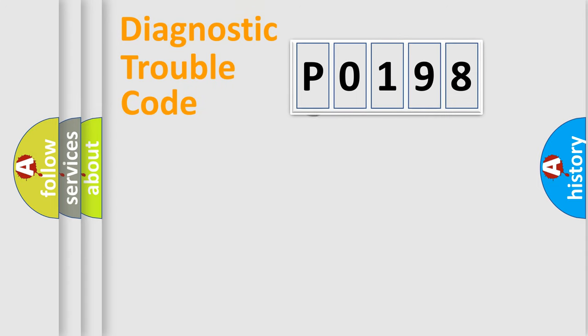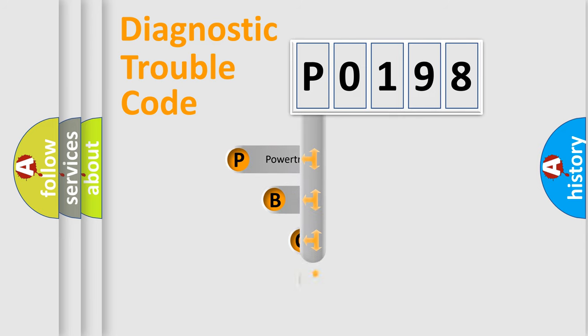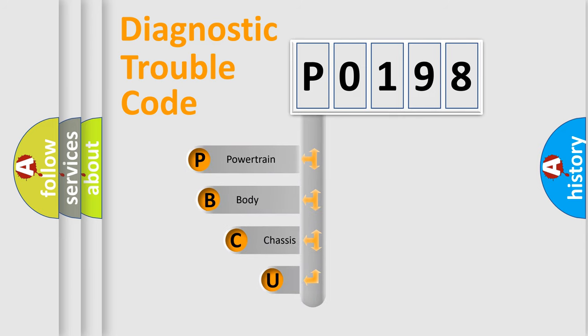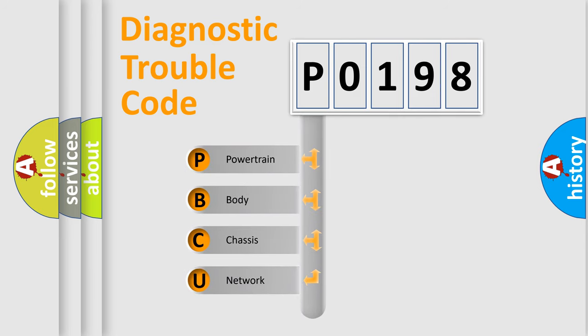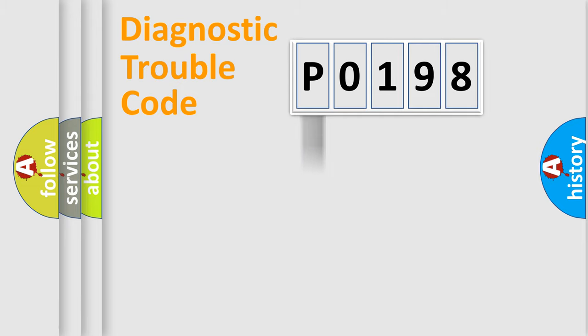Let's look at the history of diagnostic fault code composition according to the OBD2 protocol, which is unified for all automakers since 2000. We divide the electrical system of an automobile into four basic units: Powertrain, Body, Chassis, and Network. This distribution is defined in the first character of the code.